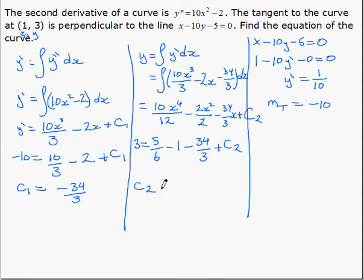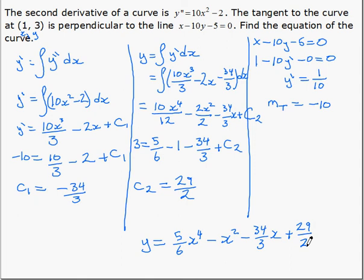tells us that the constant is 29 over 2 or 14.5. The question was to find the equation, so that means the final equation is 5 over 6x to the 4 minus x squared minus 34 over 3x plus 29 over 2.